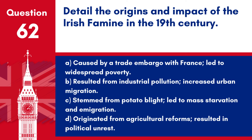Question 62. Detail the origins and impact of the Irish famine in the 19th century. a. Caused by a trade embargo with France – led to widespread poverty. b. Resulted from industrial pollution – increased urban migration. c. Stemmed from potato blight – led to mass starvation and emigration. d. Originated from agricultural reforms – resulted in political unrest. Answer: c. The Irish famine, or the Great Famine, of the mid-19th century was caused by potato blight and had devastating effects, including mass starvation, disease, and emigration.